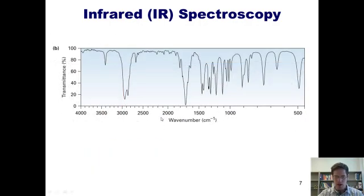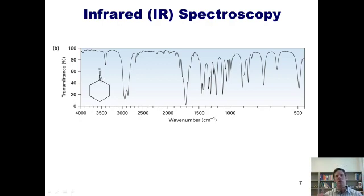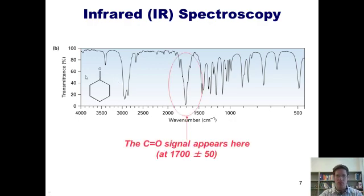Here is the IR spectrum for cyclohexanone, which has a carbon-oxygen double bond, or carbonyl. Does it contain any of the functional groups from our earlier slide? Absolutely — it has a carbonyl. Where does that carbonyl show up? Right here, around 1700 plus or minus 50, and it's huge. Once again, these peaks right here correspond to the CH bonds in the molecule.